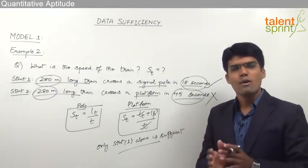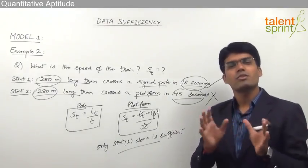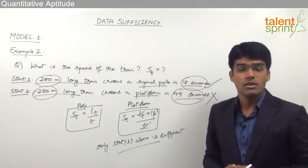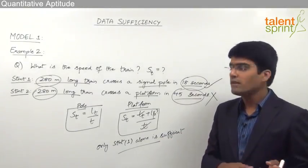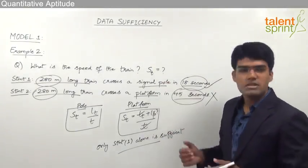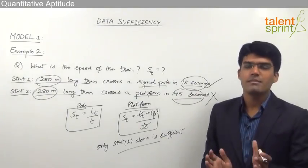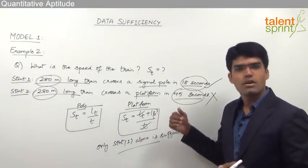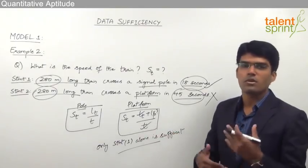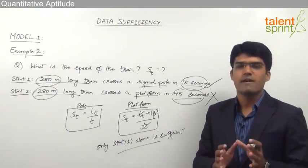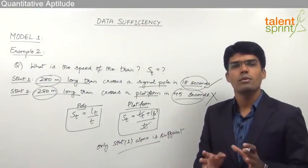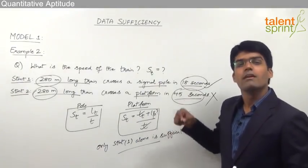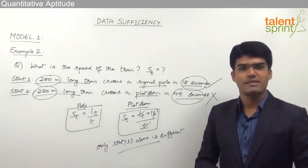This is how we use various concepts from quantitative aptitude — and sometimes reasoning — to answer data sufficiency questions. Questions can be from any topic: time and distance, time and work, profit and loss, and so on. We simply apply the relevant formulae or concepts to check which statements are sufficient to answer the question.